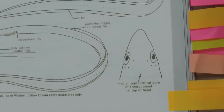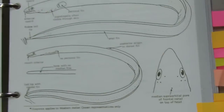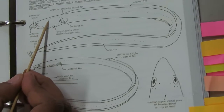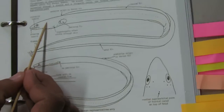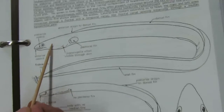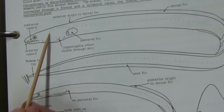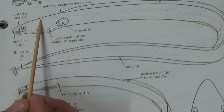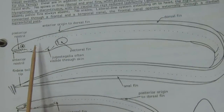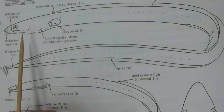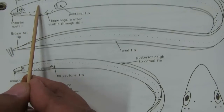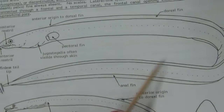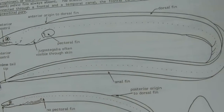Next family is Ophichthidae. The lateral line system extends onto the head. The right and left sides are connected through the frontal and temporal canal. The frontal canal opens externally through the median supraorbital pores.